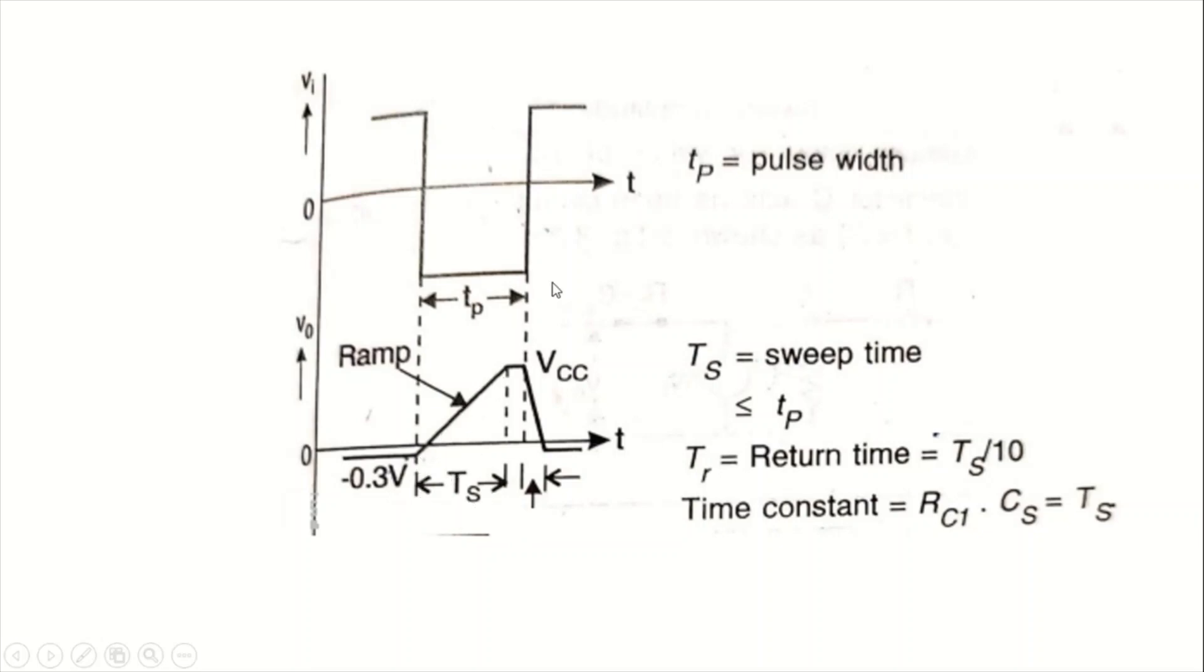This is called sweep time. After the pulse width of Tp, when the input signal again goes back to positive value, it again goes to the minimum value called minus 0.3 volts. Where Tp is the pulse width and Ts is called sweep time, which is less than or equal to Tp. Tr is the rise time, and the time constant equals RC1 into CS. This is about bootstrap time-based generator circuit working and its explanation. Thank you for listening to me.